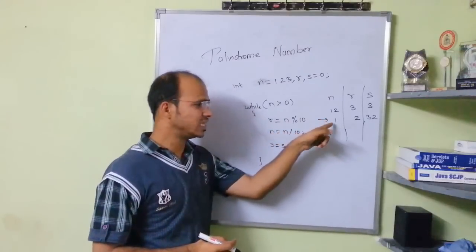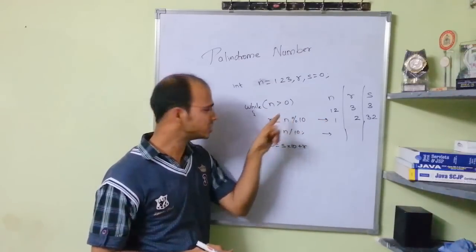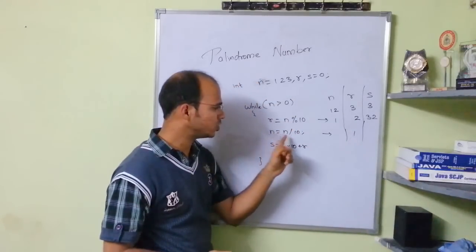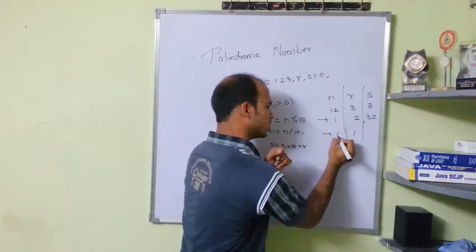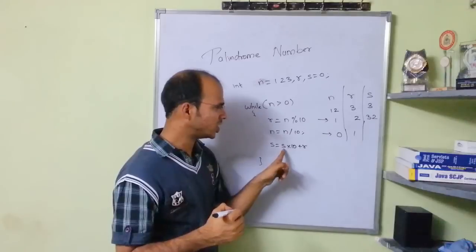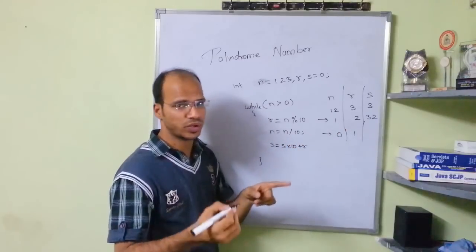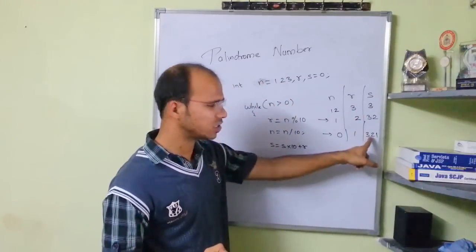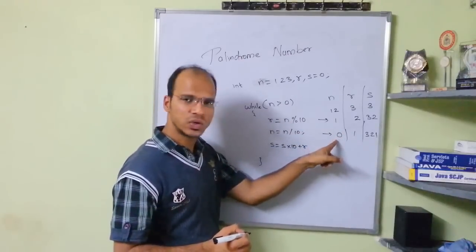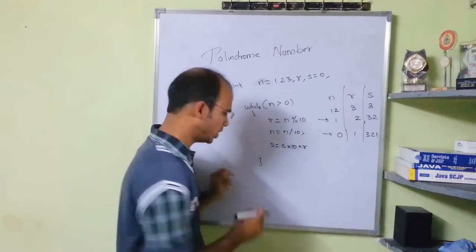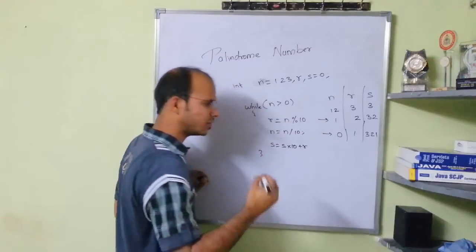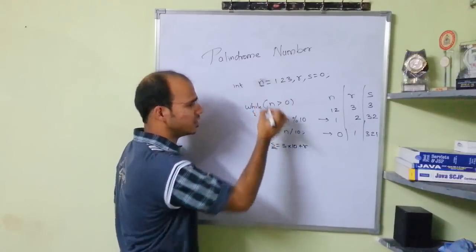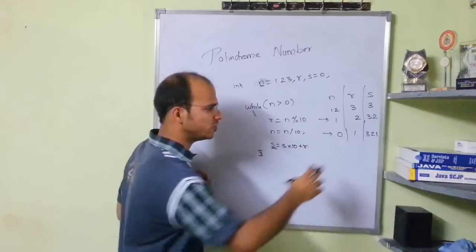Now n = 0, so 0 is not greater than 0 — the loop exits. s contains 321, which is the reverse of our original number 123. Once the loop is out, we have the reverse number stored in s.